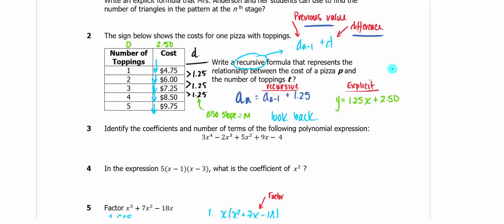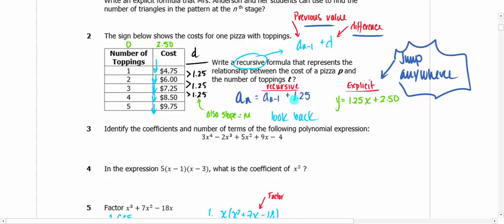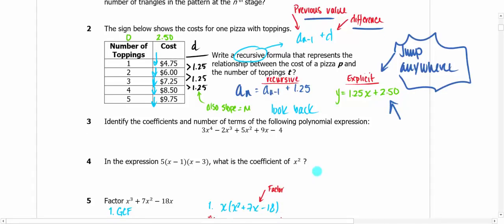Explicit means you can jump anywhere you want — that's really what we work with mostly in algebra. We spend most of our time in explicit, but this is the recursive section so you can see it. There's a relationship between them, obviously, but it's nice to talk about recursive a little bit.